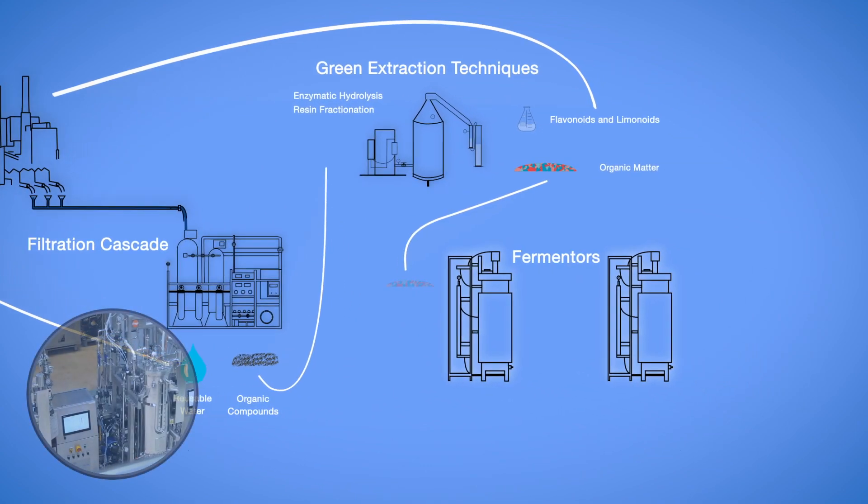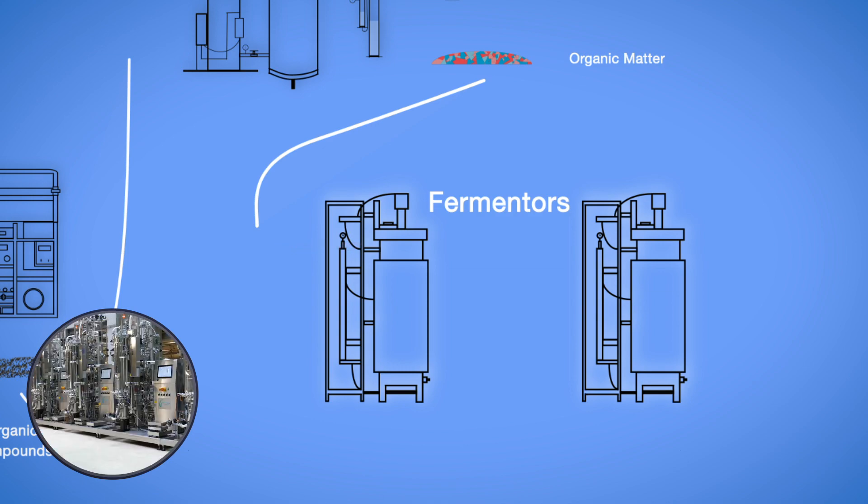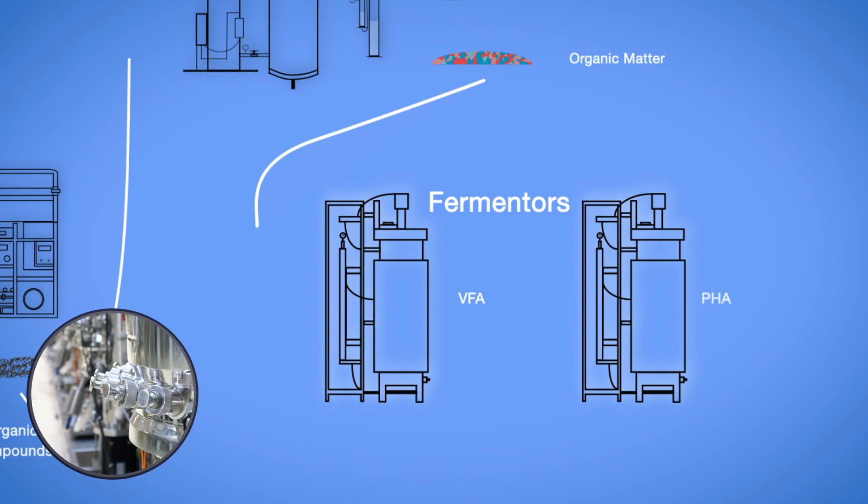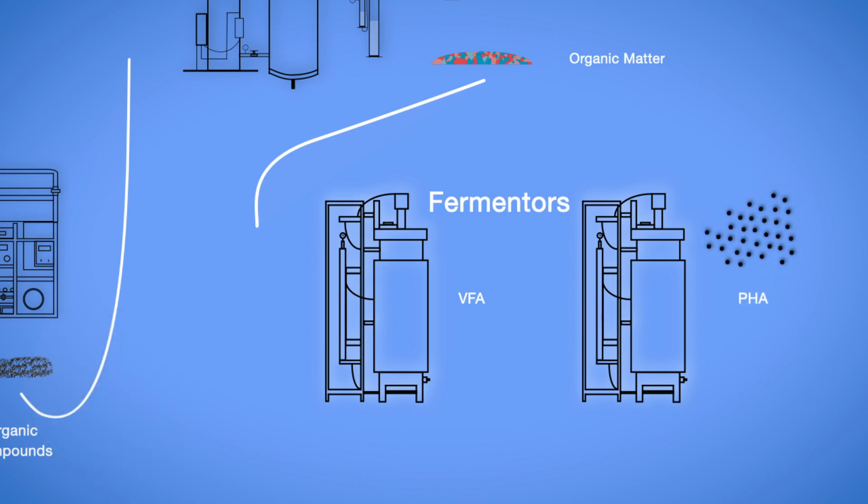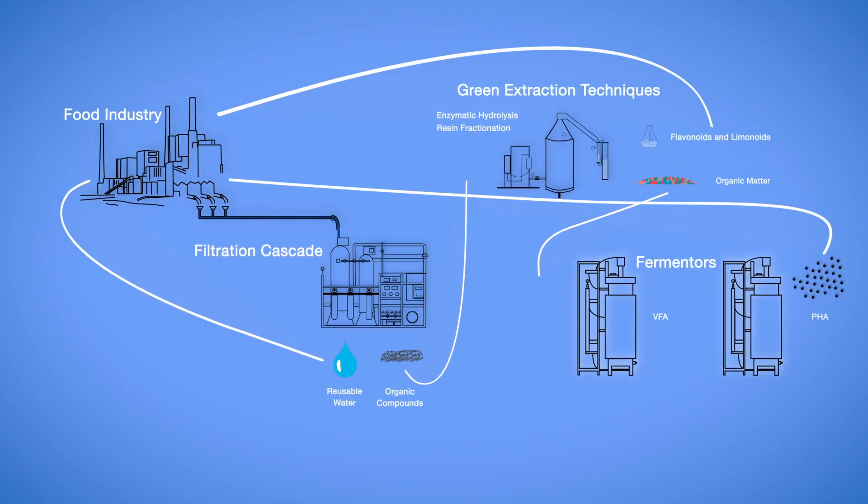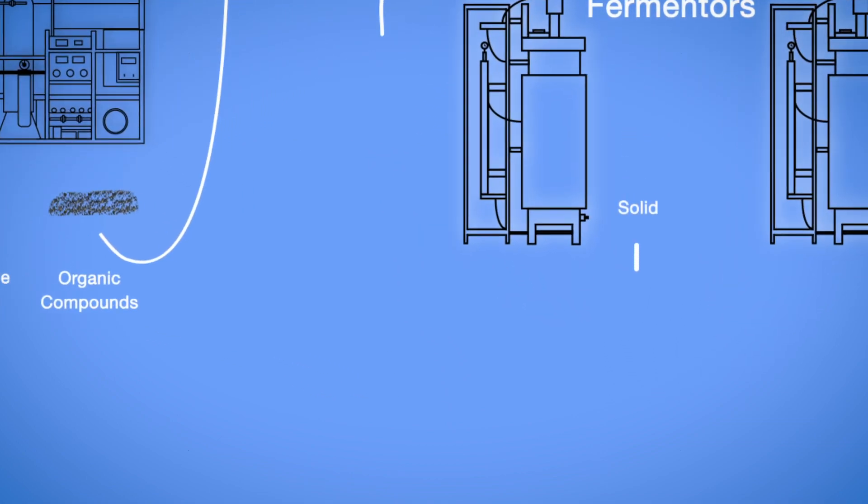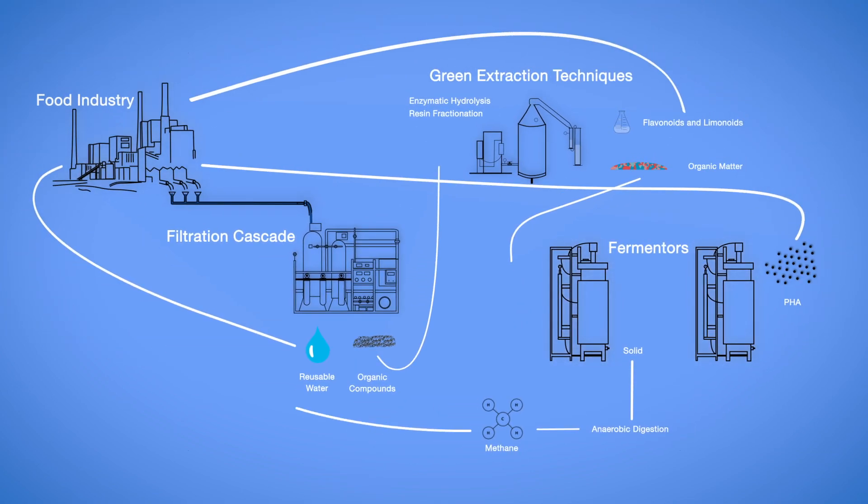The rest of recovered organic matter goes through two processes, the conversion into VFA and the subsequent conversion into PHA, thus producing biopolymer that is the base for the production of bioplastics, which can be used in other industries or in the food industry as packaging material. The VFA not converted into PHA goes into anaerobic digestion for the production of methane, a source of energy to be used in the process itself.